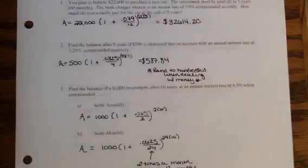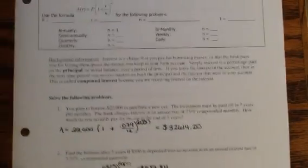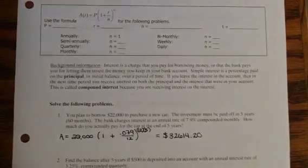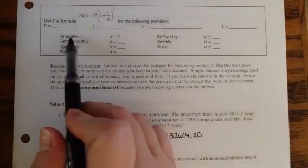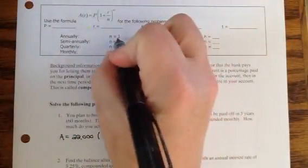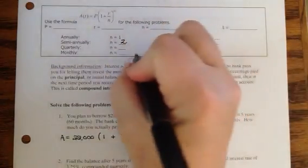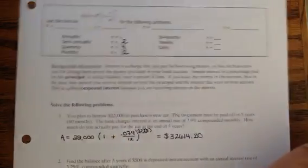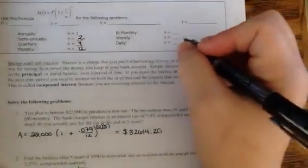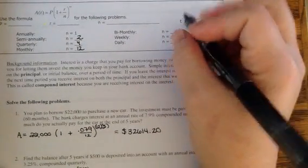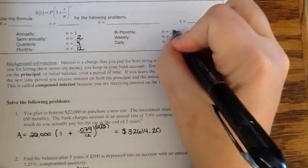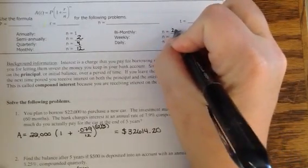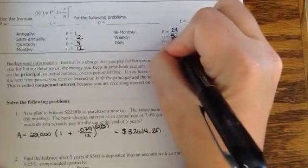So now I'm going to flip to page 162. On top of page 162, it's the same kind of problems. The only thing I want to highlight is that annual means you're compounding once per year. Semi-annually is twice per year. Quarterly is four times per year. Monthly is 12 times per year. Bi-weekly means every other week, which means twice a month. So 24. Weekly, there's 52.